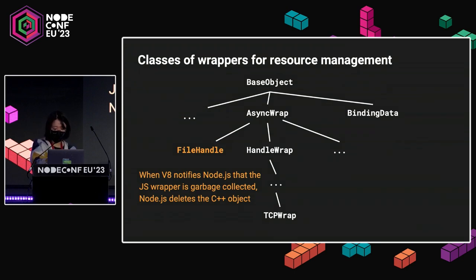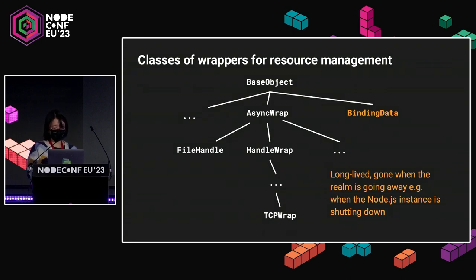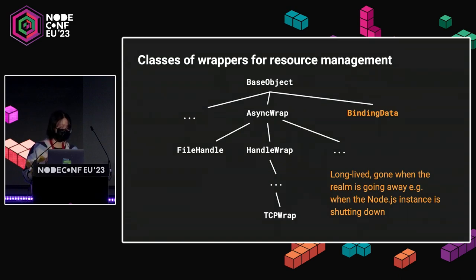There is also another class of objects, like FileHandle, whose memory management depends on the V8 garbage collector. Usually when the JavaScript wrapper is no longer reachable from the JavaScript end, V8 notifies Node about this, and Node deletes the C++ object. And finally, there are some special ones, like BindingData, that holds on to all the JavaScript binding methods we talked about earlier — that's the wrapper for whatever gets returned from internal binding. This is usually only gone when the realm is going away, for example in the principal realm of the main instance, that goes away when the Node instance is actually shutting down.